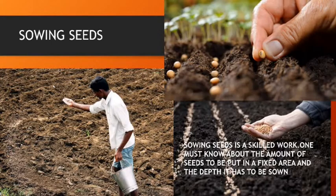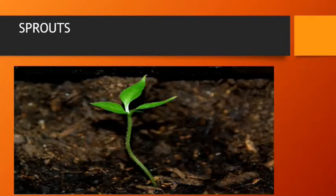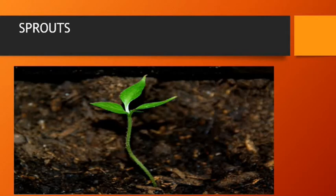The next step is sowing the seeds. Sowing seed is a skilled work — one must know the amount of seeds to be put in a fixed area and the depth at which they must be sown. After sowing, tiny plants come out of seeds and this is called a sprout. Irrigation is done as every plant needs water to grow, and it is necessary in areas of low rainfall and seasons without rainfall.